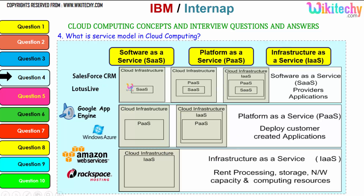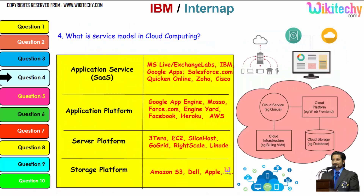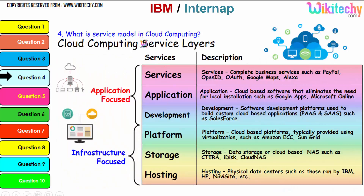Examples include: for SaaS, Lotus Live and Salesforce CRM; for PaaS, Windows Azure and Google App Engine; for IaaS, Amazon Web Services and Rackspace hosting. The important service layers are services, application, development, platform, storage, and hosting. Storage platforms are provided by Amazon S3, Dell, and Apple. These are important services that will also be asked about in cloud computing interviews.